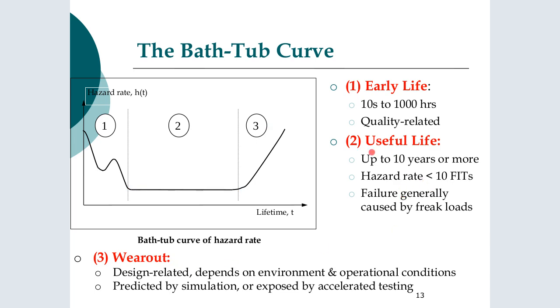So this terminology is quite intuitive. Early life is where it's quite hazardous, and this is largely because there are inbuilt quality-related issues. There's something wrong with the design that is fundamental, and failure is precipitated quite quickly in the environment. Region two is where the hazard rate is constant. This is where the design is functioning as expected, and any failure that is occurring is as a result of freak loads or rare occurrences.